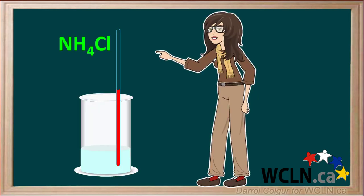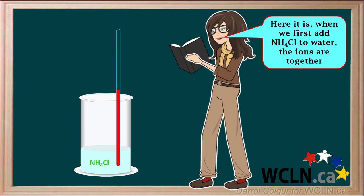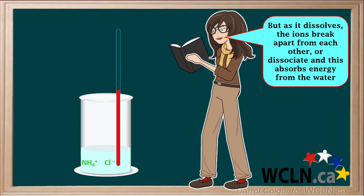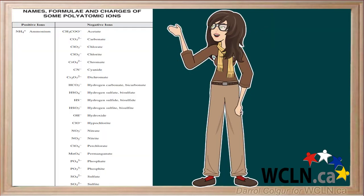An interesting property of ammonium chloride is illustrated when we take some ammonium chloride and add it to water at room temperature — it will dissolve and the temperature will go down a lot. When we first add NH₄Cl to the water, the ions are together, but as the ammonium chloride dissolves, the ions break apart from each other, or dissociate, and this absorbs energy from the water, making its temperature go down. There are many possible compounds with polyatomic ions, and they all have different properties. Now you've learned how we name these.